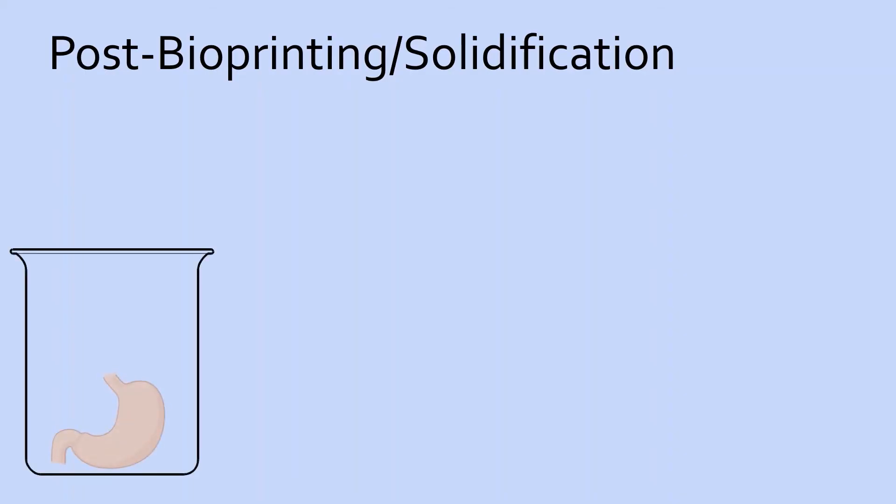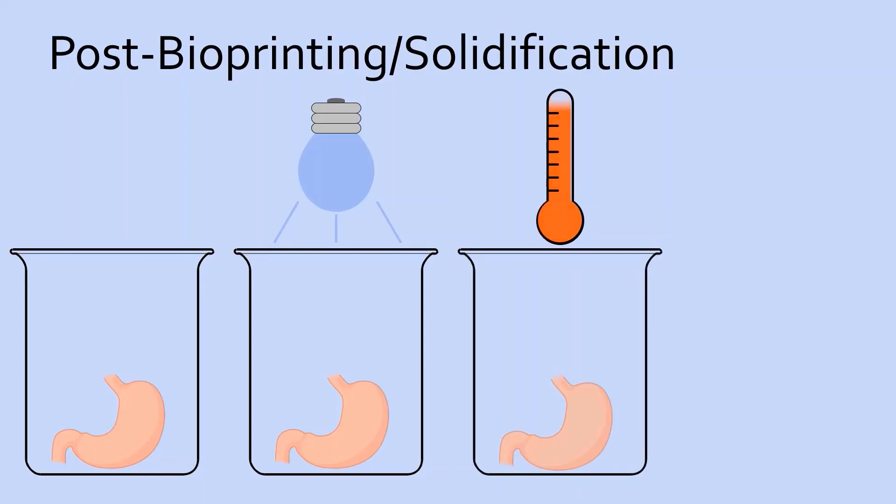Once you've finished the physical bioprinting portion, the final step is solidification. In general, bioink is a viscous liquid, so in order for it to become the desired product, it needs to harden. Sometimes the bioink will solidify on its own. Other times, the process of cross-linking will occur with the aid of things like exposure to UV light, physical changes like heating or cooling, or chemical changes due to the addition of certain compounds.